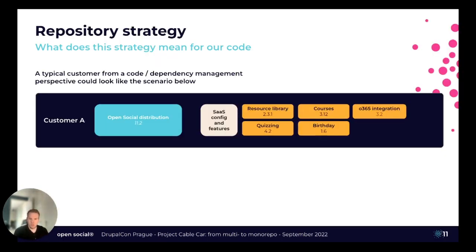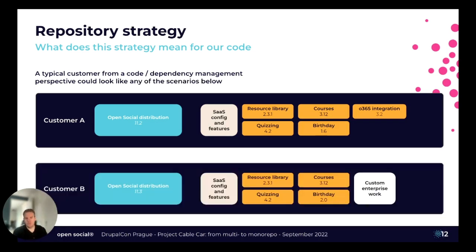So let's look at a typical customer in OpenSocial. Like I said, everybody gets a distribution — so we have a version of the distribution installed, default configuration on top, and a given set of extensions. In this case just five, but it could be any number. All of these extensions live in their own private repository. Using Composer and in our case private packages, we can install, update, and download the dependencies as necessary for a specific version. All good — it works.